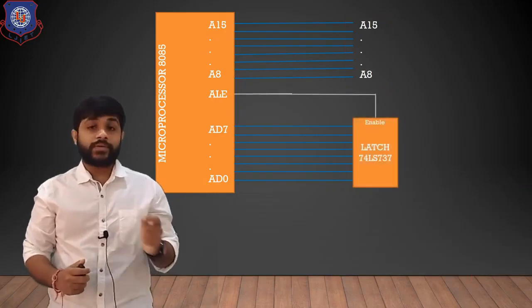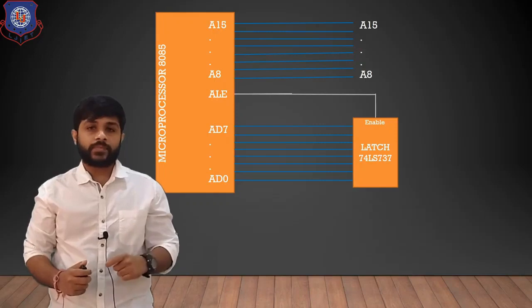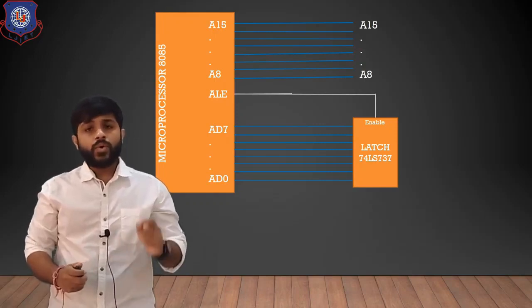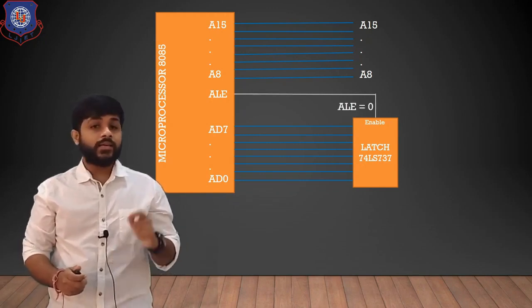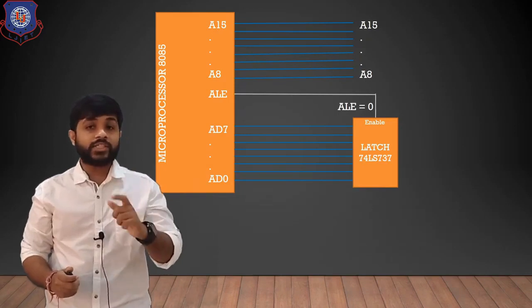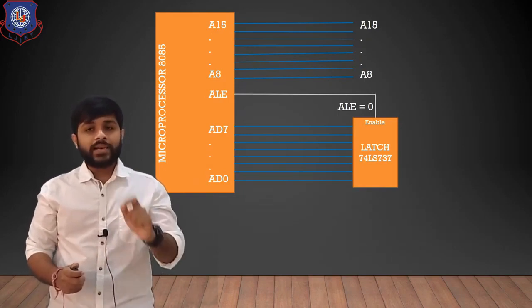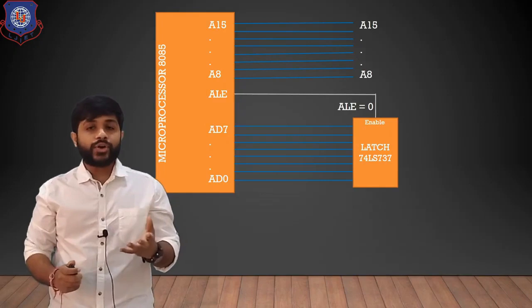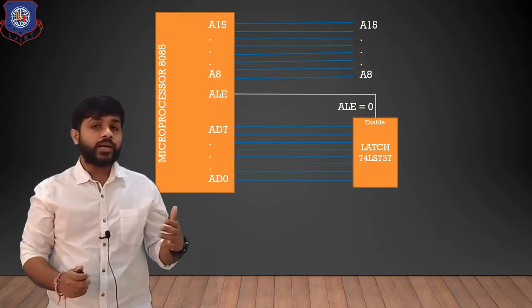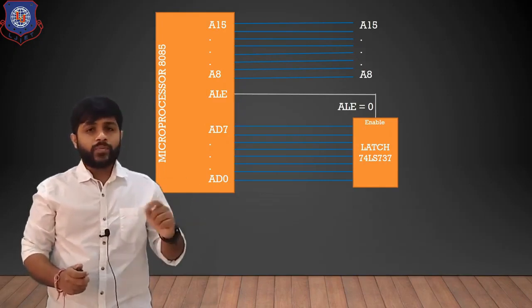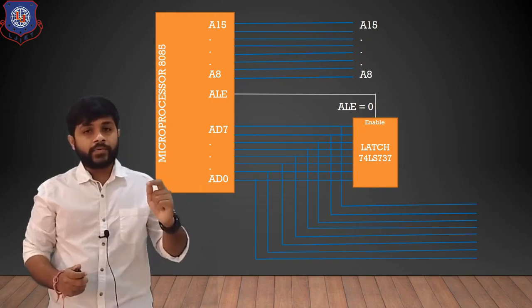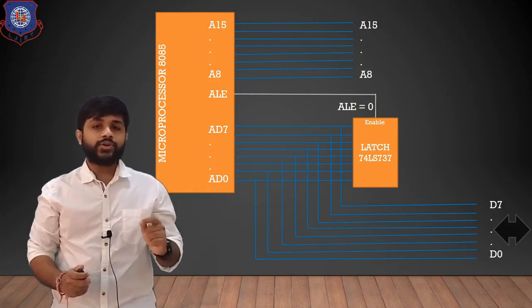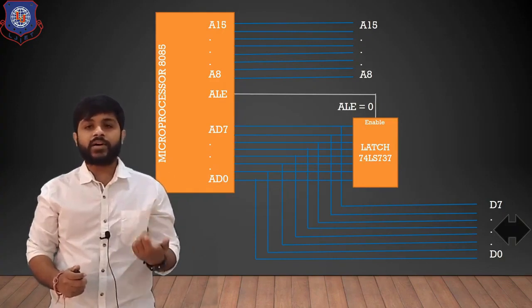This is a latch which is 74LS373 and there is an enable. When the output of ALE is 0, it means the latch is not enabled. When the latch is not enabled, we are not going to get anything outside of that latch. So when ALE is 0, AD0 to AD7 will be considered as D0 to D7, meaning data bus.